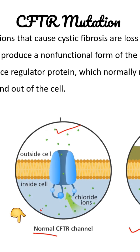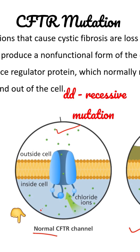We know that cystic fibrosis is a recessive mutation. So, for a person to have cystic fibrosis, there has to be a mutation in both copies of the CFTR gene — one from the mother and another from the father. We can represent that as small letter d and small letter d. This is a recessive mutation.